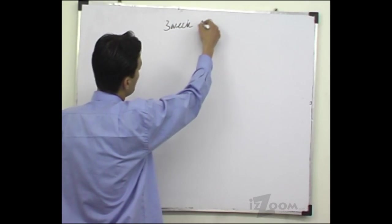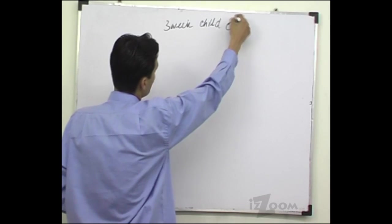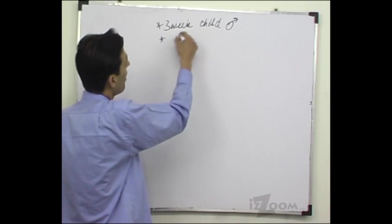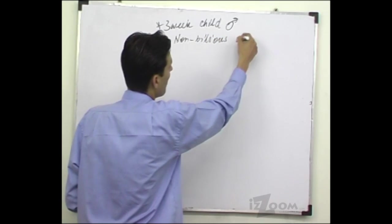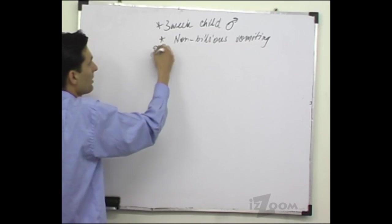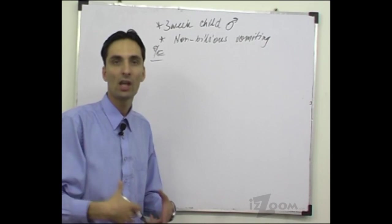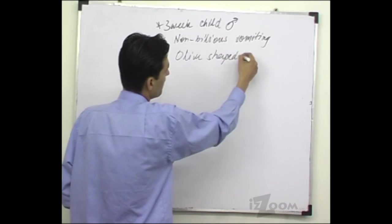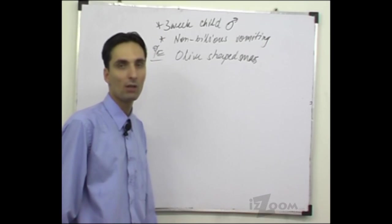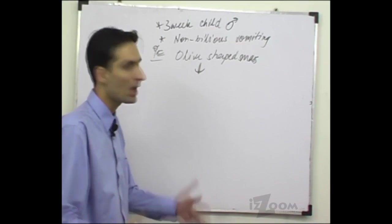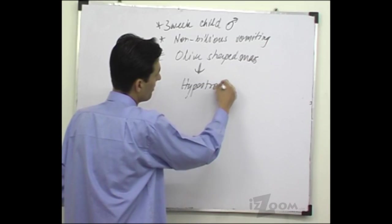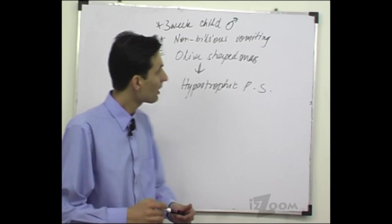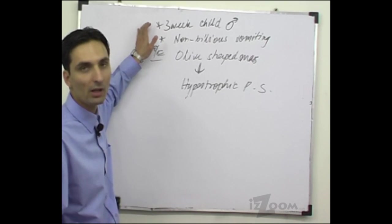A three-week-old male child presents with non-bilious projectile vomiting. On examination, you palpate an olive-shaped mass in the upper abdomen. The most likely diagnosis in this case is hypertrophic pyloric stenosis.